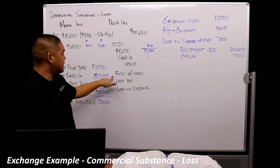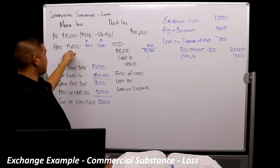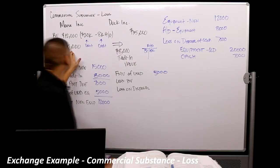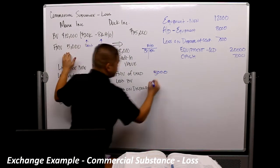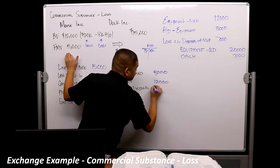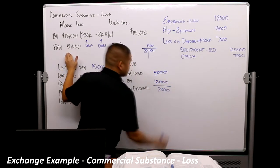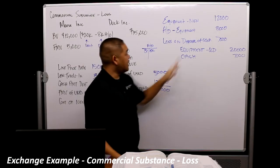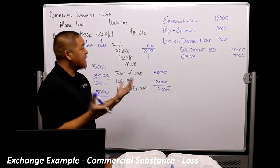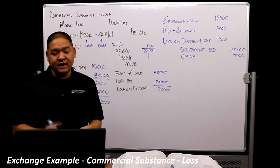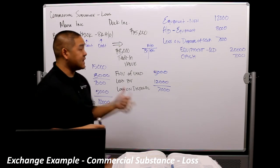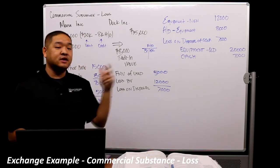So the fair market value of the used equipment, well, the fair market value is $5,000. The book value is $12,000. 5 minus 12 gives us $7,000. So that's how we calculate it. The loss on disposal, loss on disposal over there. So that's how we would do the journal entry for an exchange in a case of commercial substance. It has commercial substance, and there is a loss.